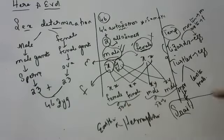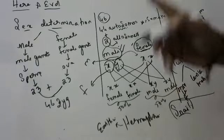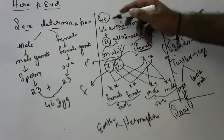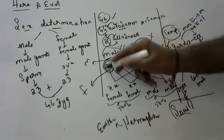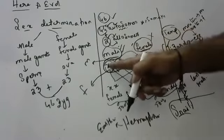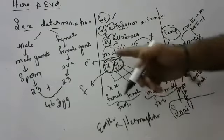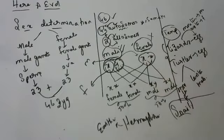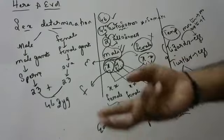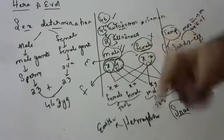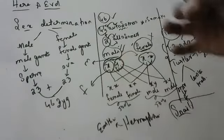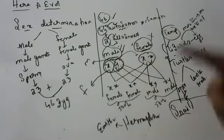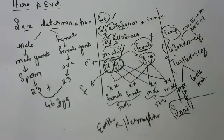To summarize: in humans, 46 chromosomes are present — 44 autosomes and 2 allosomes. In males it is XY, in females it is XX. If X of male fuses with X of female, a female baby comes; if Y of male fuses, a male baby comes — 50/50 chance. No one can control this because fertilization involves inevitable chemical reactions.